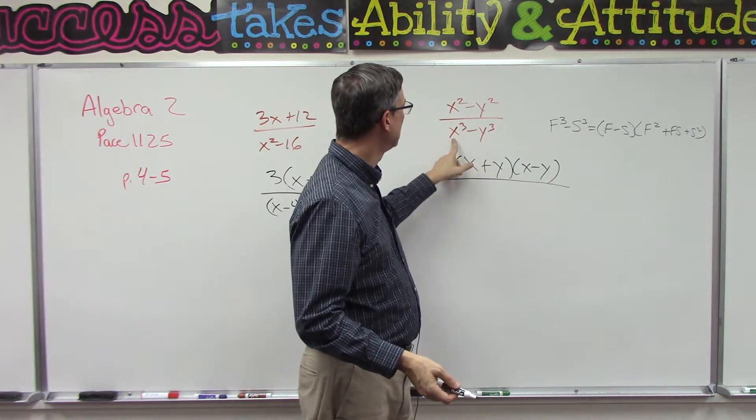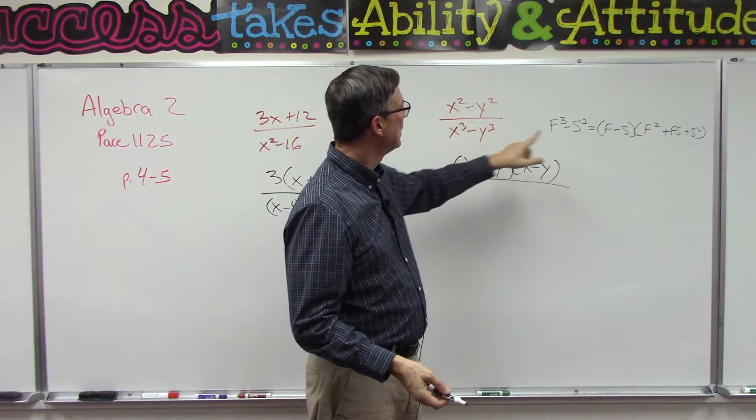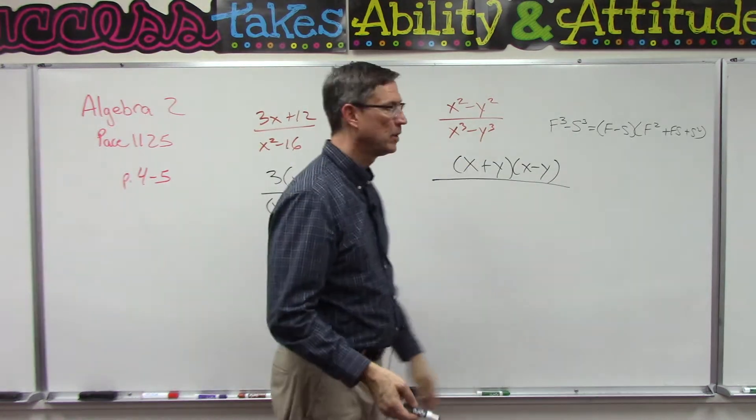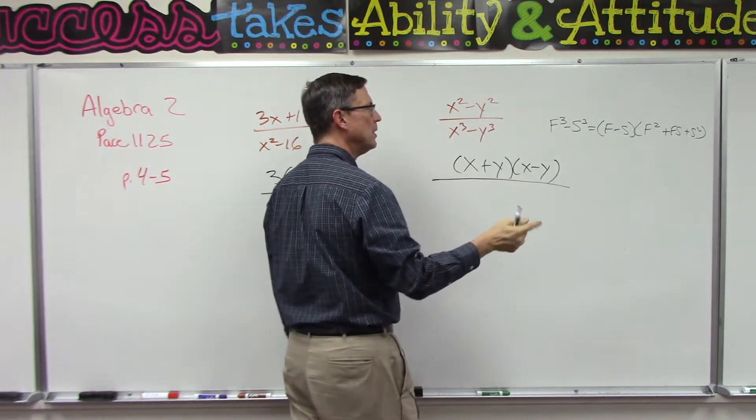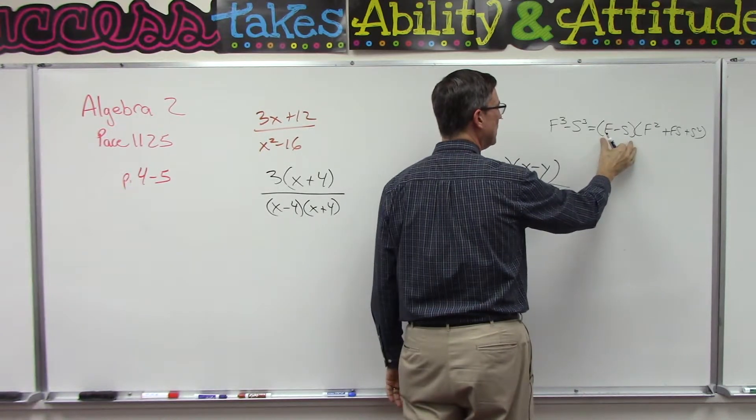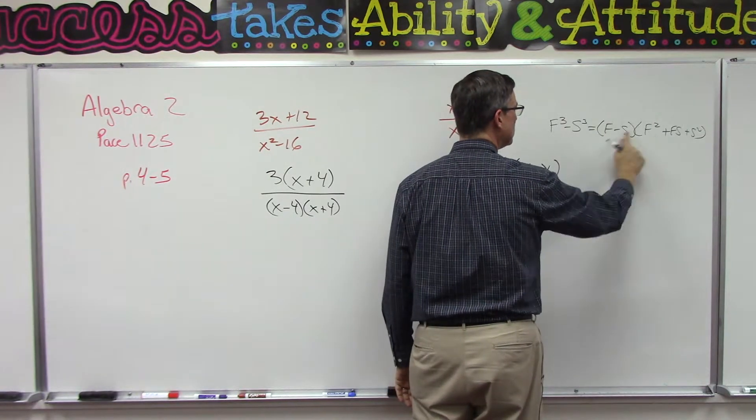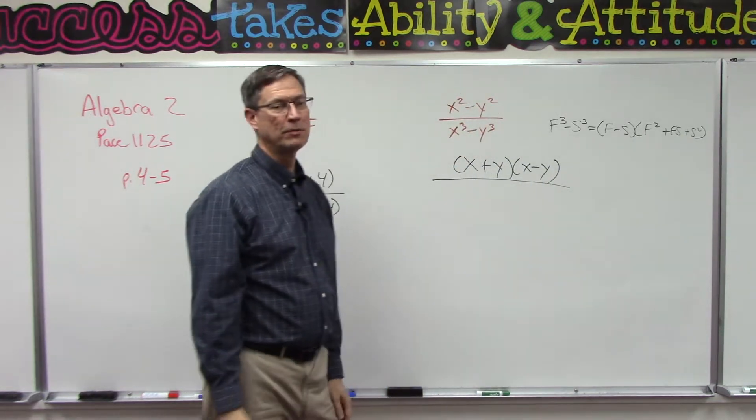So we have this, we can follow this pattern by plugging in x every time we see an f and y every time we see s. So we're going to take this pattern right here. And how do I remember this? If this is minus here, then we're going to do minus in this one, and then the next one is always the opposite of this one. The last one is always, always, always positive. Okay, here we go.